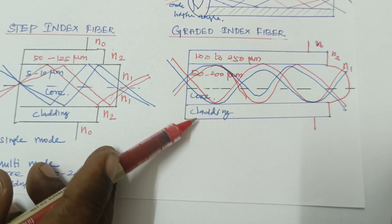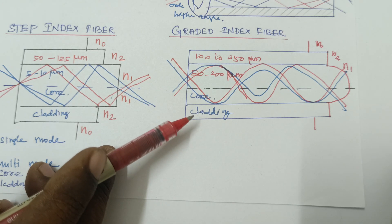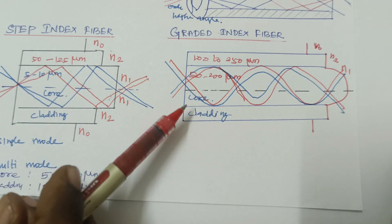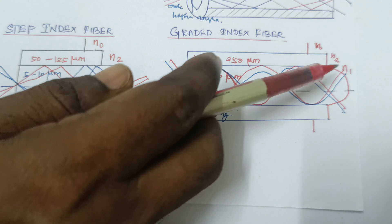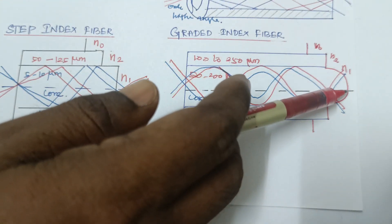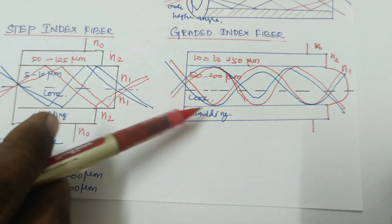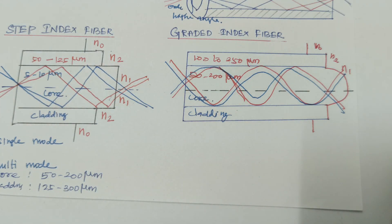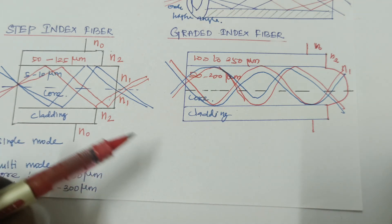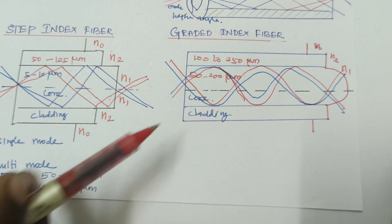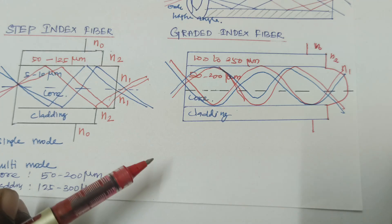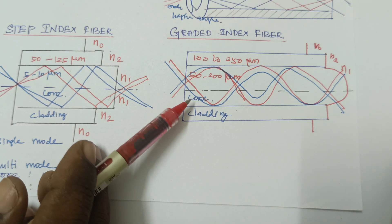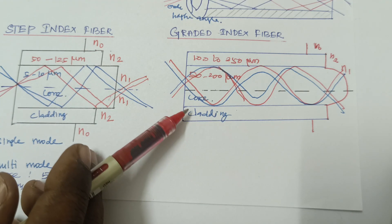Disadvantages of graded index fiber: it is the most expensive among all types of fibers, and fabrication is difficult. This is because the core-cladding interface must slightly decrease towards the interface, with the core refractive index being maximum and gradually decreasing. This complex structure makes fabrication difficult. Applications: it is widely used in intra-city trunk lines between central telephone offices and for medium distance applications.